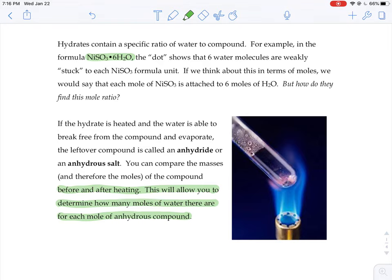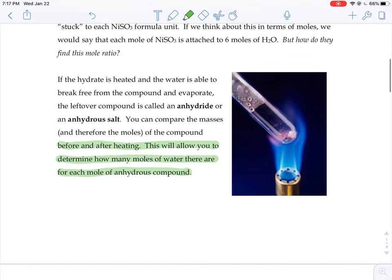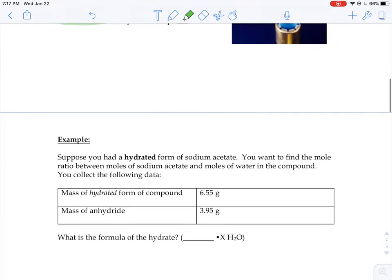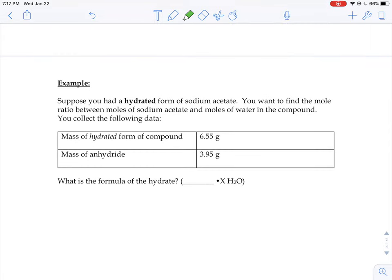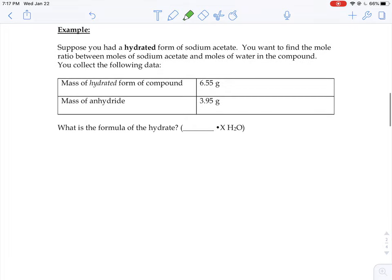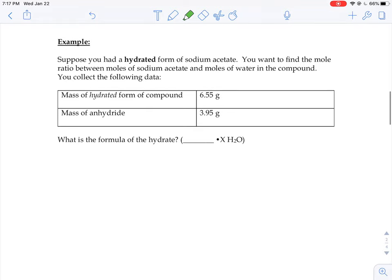I'm going to show you an example today of how to solve for a chemical formula of a hydrate. Let's say we have a hydrated form of sodium acetate and we're trying to figure out how many moles of water are attached to each sodium acetate formula unit. At the beginning of the lab, you get the mass of this hydrated form, 6.55 grams. Then you heat it up, the water evaporates, and it leaves just the anhydrous stuff behind. And that weighs 3.95 grams. What we're trying to figure out is how many moles of water are attached to each sodium acetate.